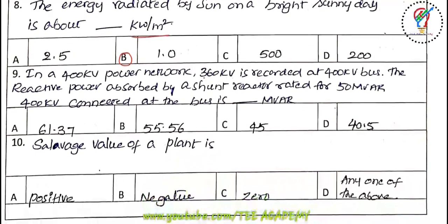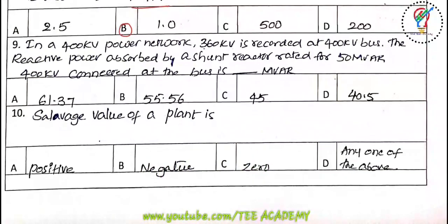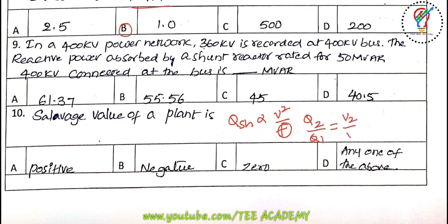Ninth question — a numerical problem: in a 400 kV power network, 360 kV is recorded at the 400 kV bus. The reactive power absorbed by a shunt reactor rated for 500 MVAr connected at the bus is how many MVAr? The hint is that Q for a shunt reactor is proportional to V²/X, where X is constant. So Q2/Q1 = (V2/V1)². Applying this relationship, the answer is option D: 40.5 MVAr.